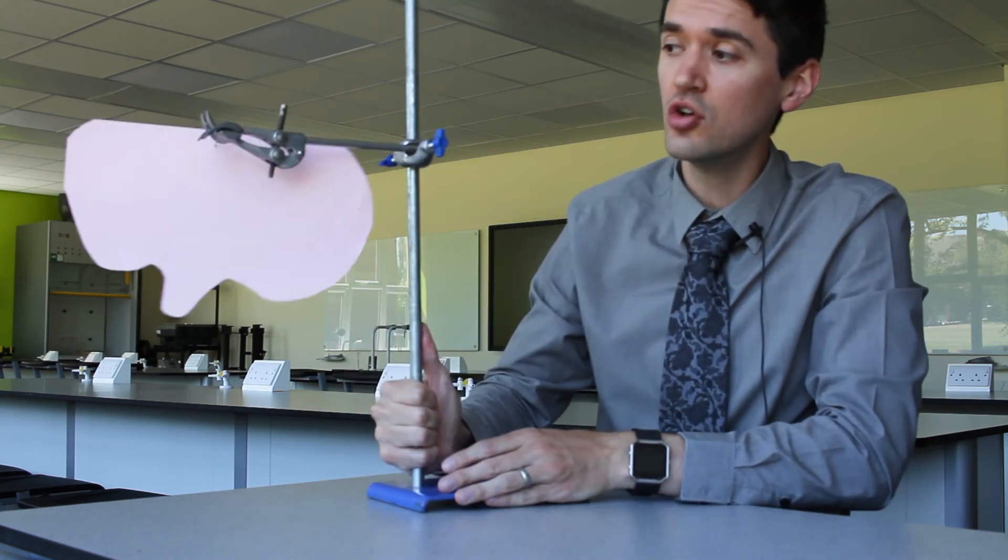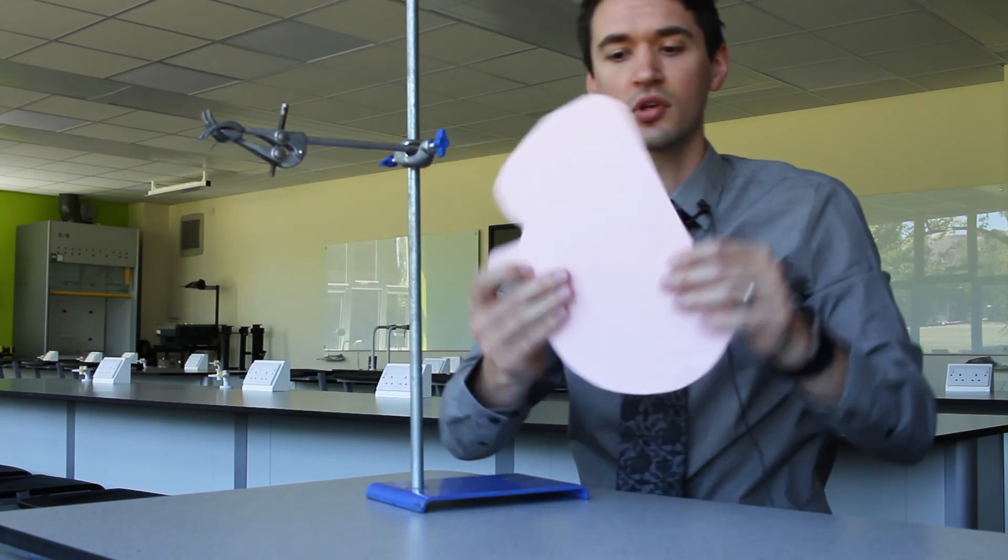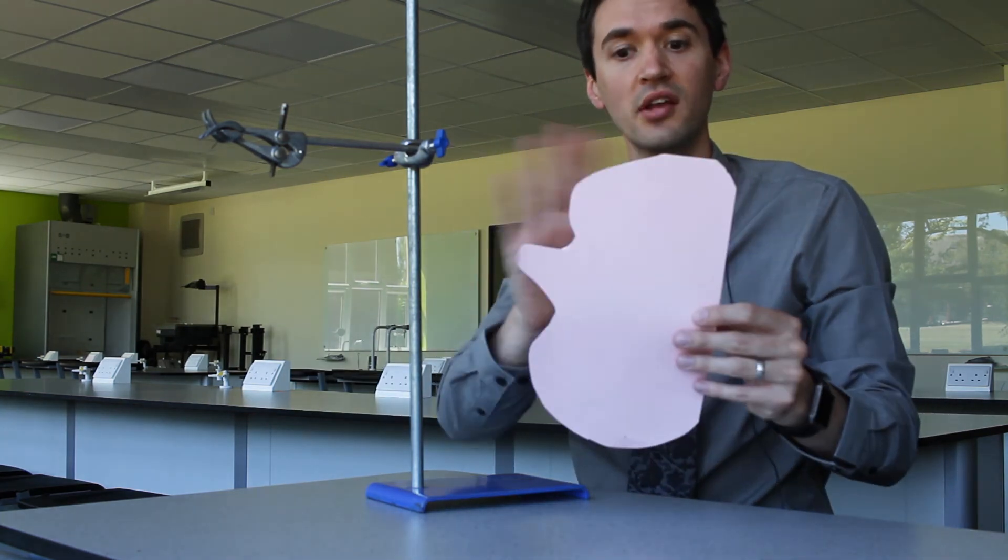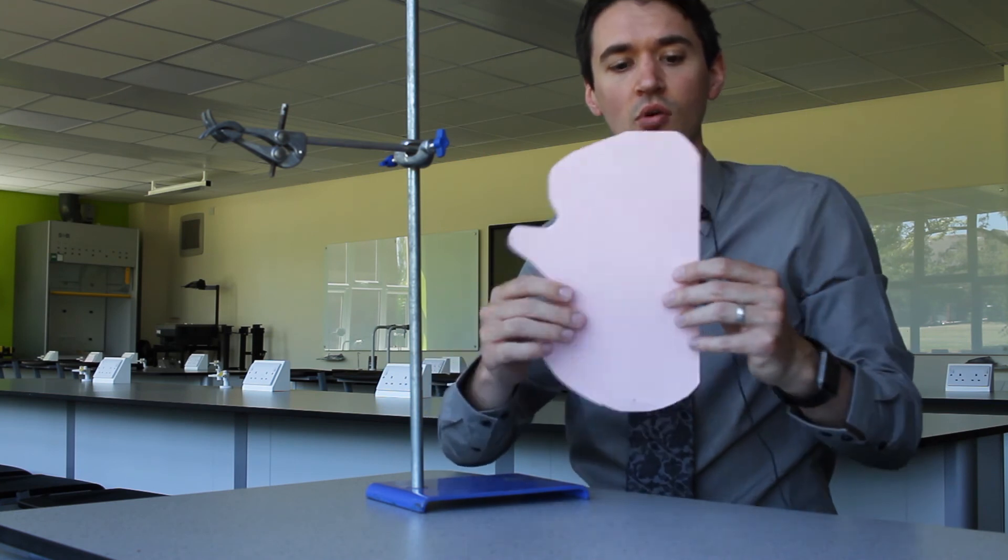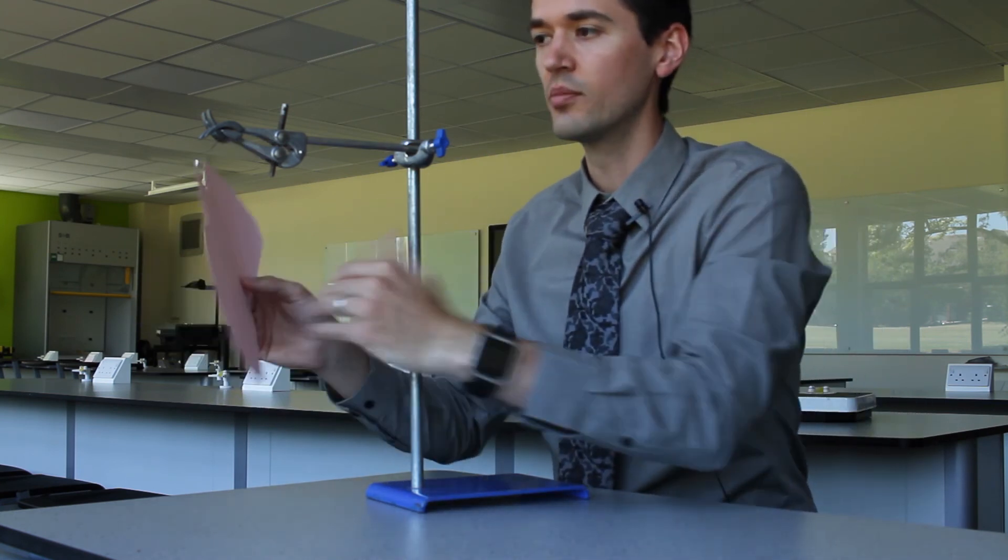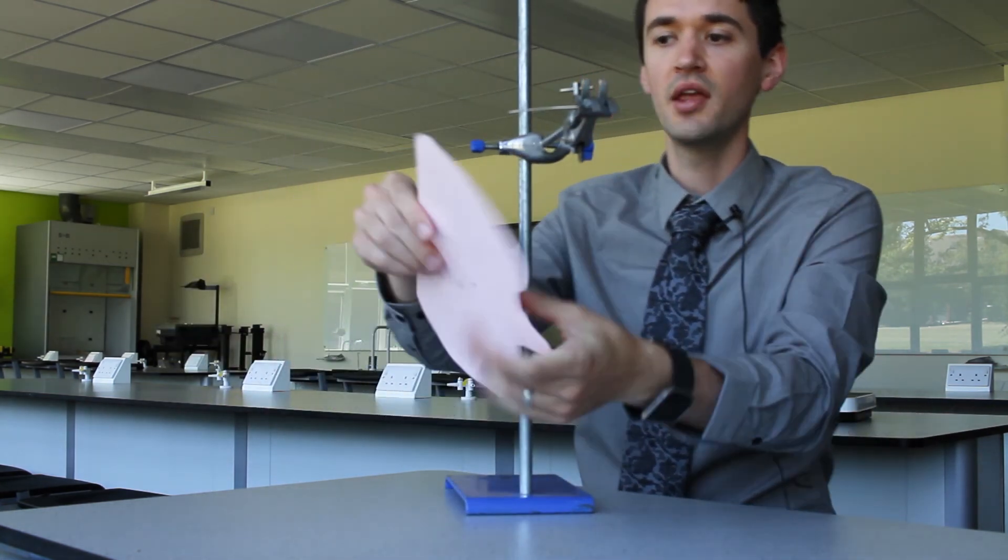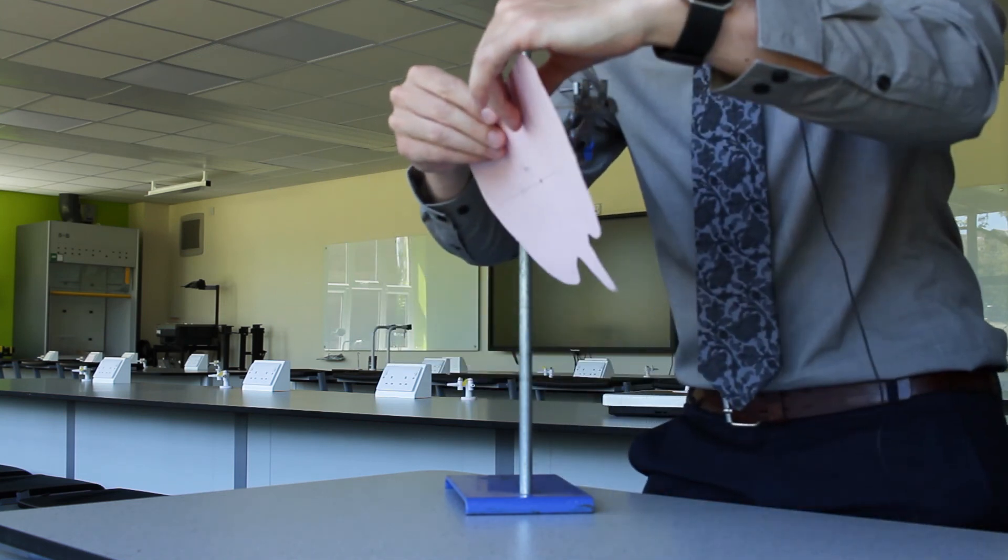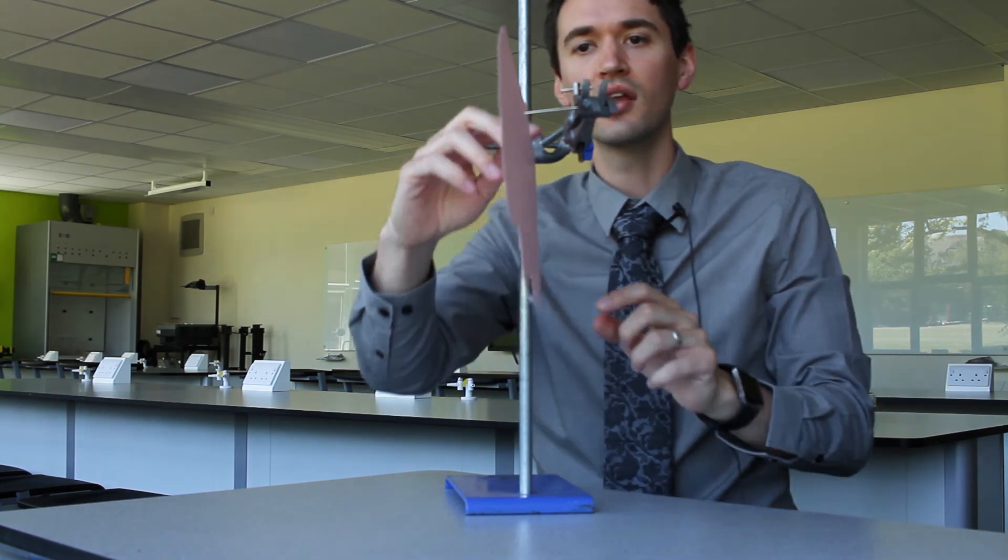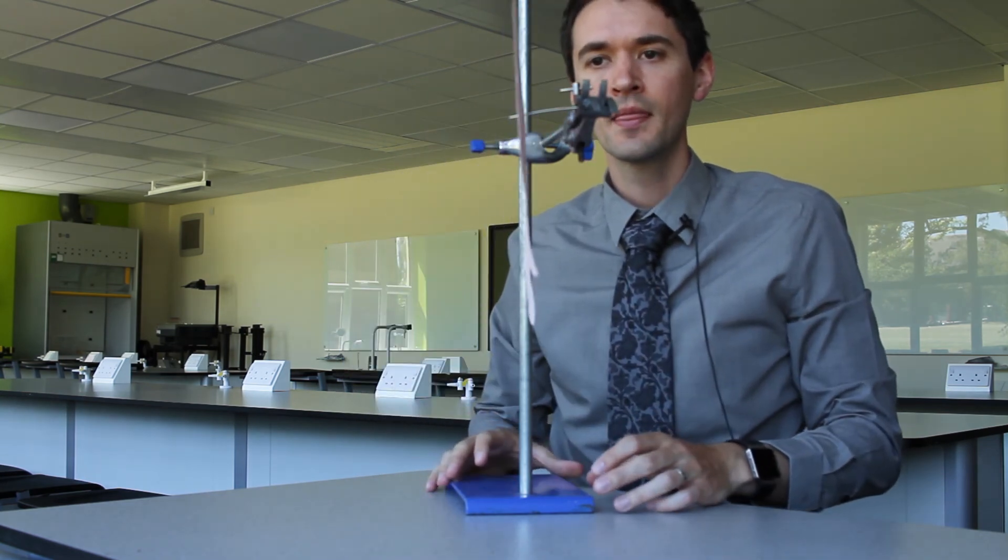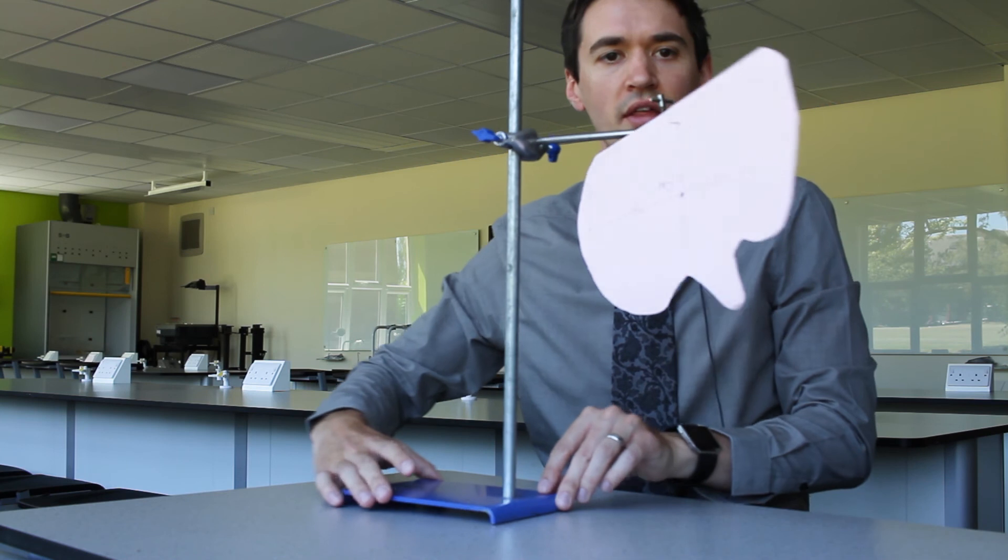Now, suppose you've got a non-symmetrical shape like this, just a random planar object. Planar just meaning flat. So where's the centre of mass of the object? What you can do is just suspend the object on a pin. So if it's freely suspended from any point, if we put that in on here and I let it spin.